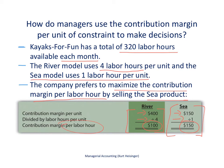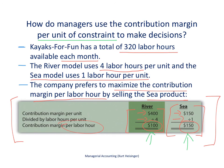What this tells us — if labor hours is our constraint, and it is in this example — is that we would prefer to produce the sea kayak because it yields a contribution margin per labor hour of $150, rather than the river kayak which yields $100 per direct labor hour. This is another way to measure the contribution margin, done per unit of constraint, to evaluate how to make the best use of the constrained resource we have.